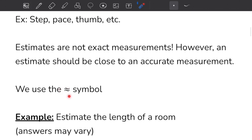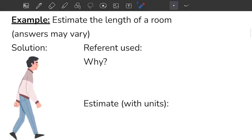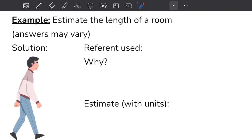You'll notice that we use this symbol quite often whenever we estimate, and this just means approximately. Now that we've discussed what estimation is and what we can use to estimate, let's have a look at an example. I'd like you to pause the video right now and if you're somewhere where you're able to actually estimate the length of a room, please go ahead and do it.